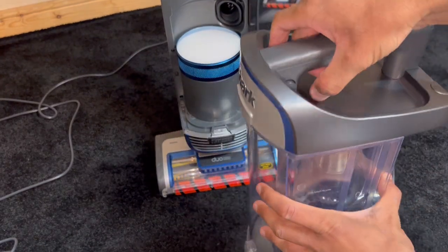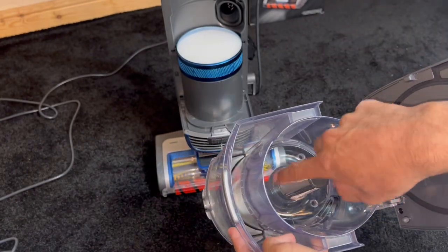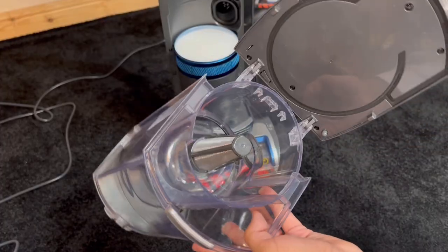You've got a single cyclone design right here. Pressing these two buttons, your lid opens up. This is designed to divorce the dust and dirt from the airflow and just fling it out into this bin. It's only a single cyclone.